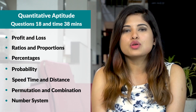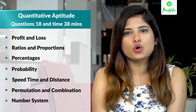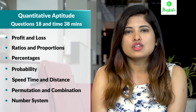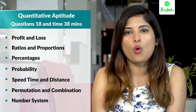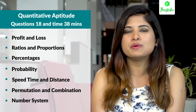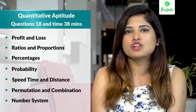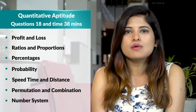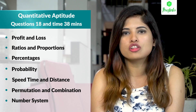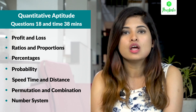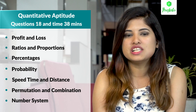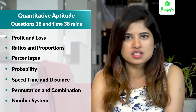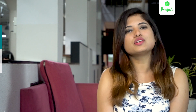The Quant section is present for both GTS and GBS profiles. The total number of questions is 18 and the time allotted is 38 minutes. The topics include Profit and Loss, Permutation and Combination, Probability, Number System, and other topics visible in the table.